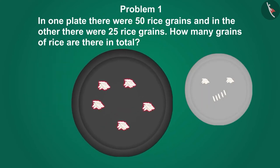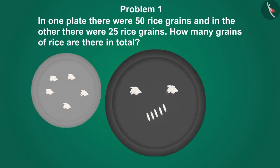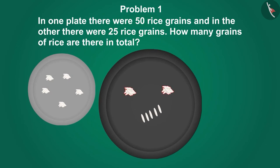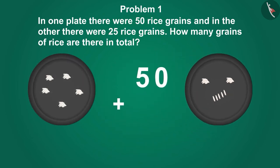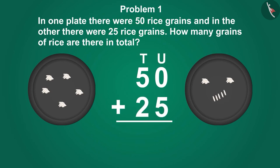There are 5 piles of rice, and in each pile there are 10 rice grains. This means there are 50 grains in total. On the other plate there are 2 piles of rice, and in each pile there are 10 grains of rice, meaning there are 20 rice grains. And 1, 2, 3, 4, and 5 more single rice grains, meaning there are 25 rice grains in total. Come, let's write this down.